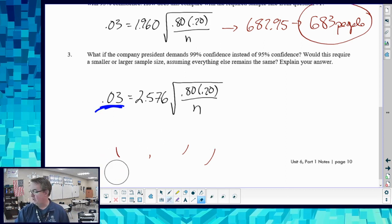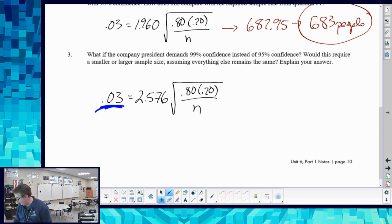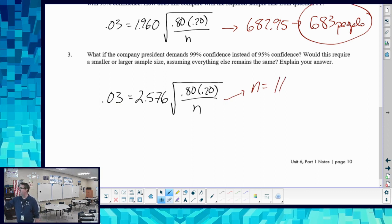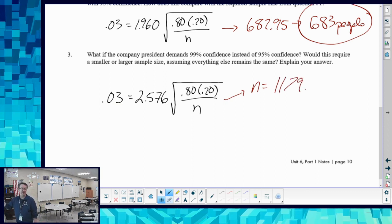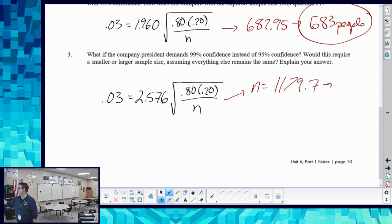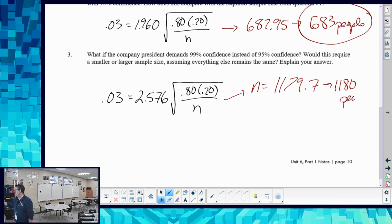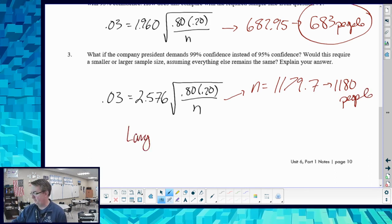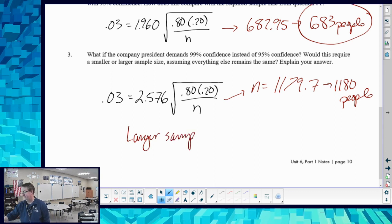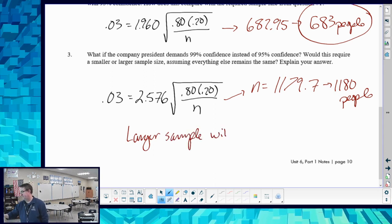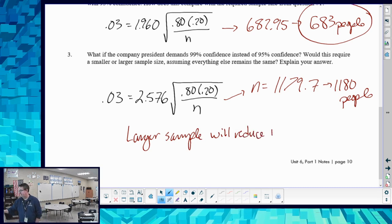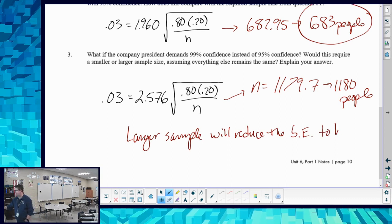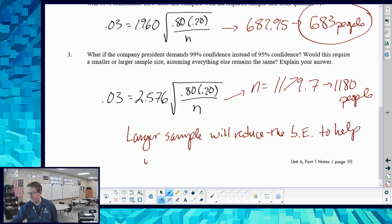So again, you're going to solve this the normal way like we did up above. This is going to give you an n value very similar to what we had before - 1,179.87. So we're going to say 1,180 people. And then in terms of explaining your answer, a larger sample will reduce standard error to help offset the larger z-score value.